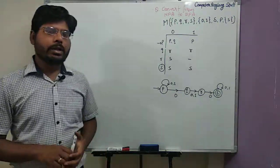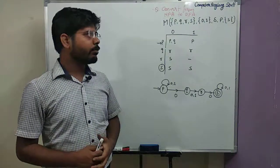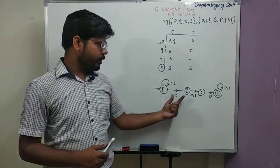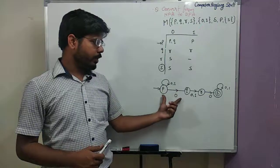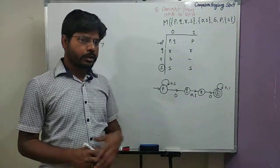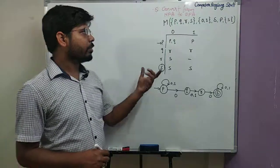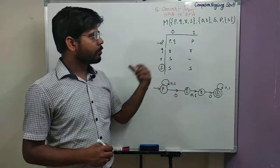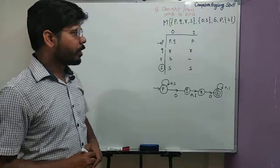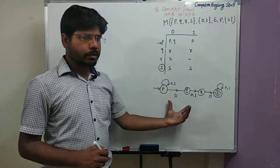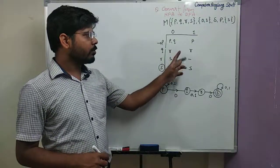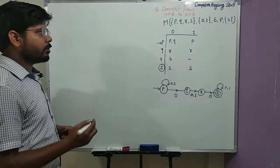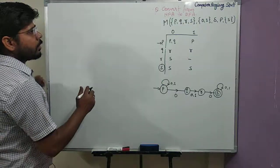Hello friends. In our last lecture we have seen how we can convert from NFA to DFA. We converted from an NFA state diagram to a DFA diagram. Now we will see if the NFA is given in a tabular format, how we can convert from this format to DFA. You don't need to convert from the tabular form to the diagram first — it is just for representation. The steps are similar.